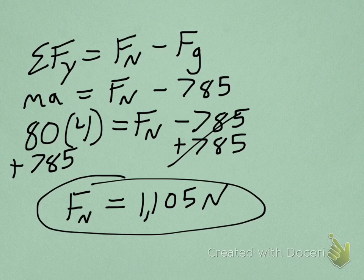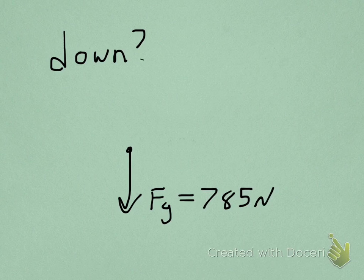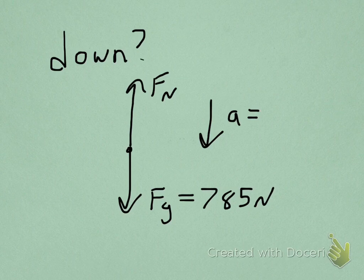Let's try another one. So what if we change that? So now the elevator is accelerating downwards. That changes a little bit. The force of gravity is still 785 newtons. Normal force is still up. The big difference is the acceleration is down.